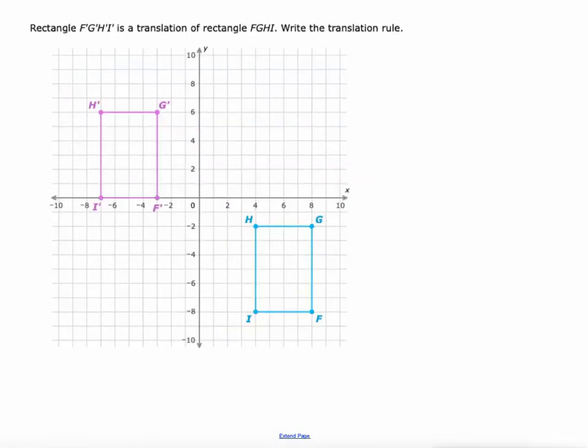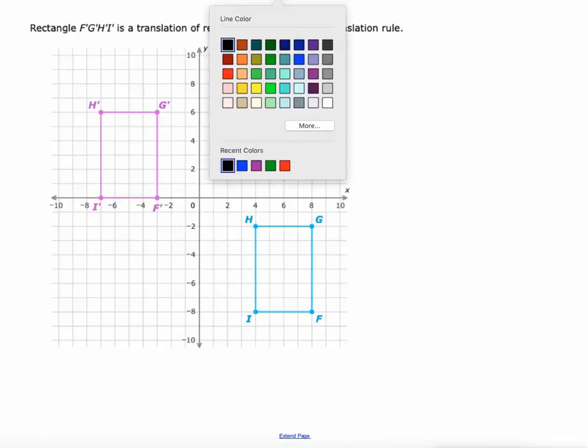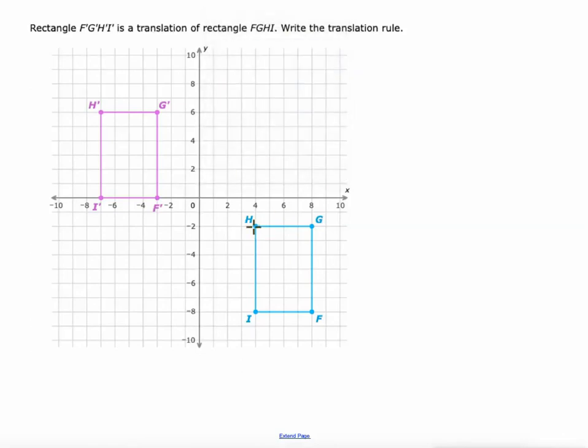This time, make sure you identify the original image. It's FGHI. It's this one over here without the little apostrophes. Those apostrophes are read as prime. But this one actually goes left and then up. That's what the translation is. So let's look at that translation. Let's follow H. H goes that far to the left and then it goes this far up. So how far is that?